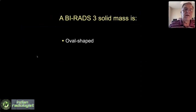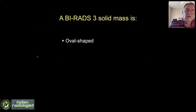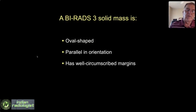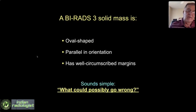In ACR BIRADS edition 5, you need three things in order to call a lesion benign: oval shape, parallel orientation, and well-circumscribed margins. That sounds really simple. What could possibly go wrong?